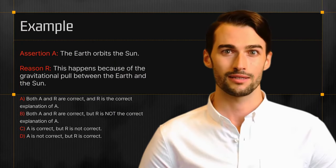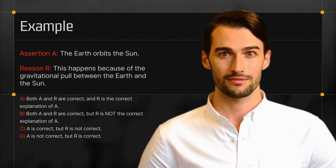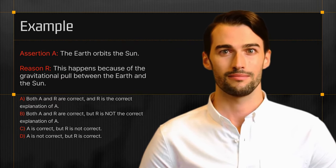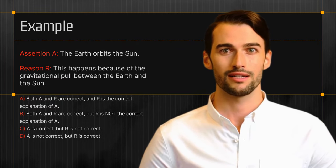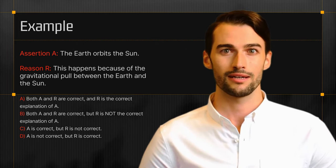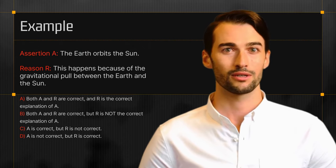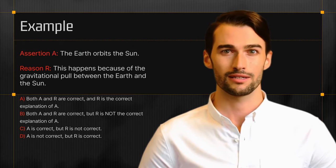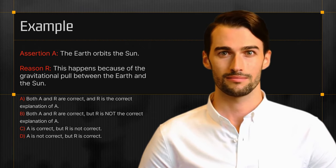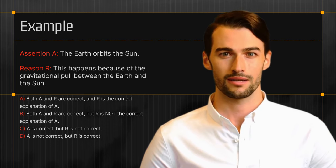Let's illustrate this format with an example. Assertion A: The Earth orbits the Sun. Reason R: This happens because of the gravitational pull between the Earth and the Sun. Based on these statements, take a moment to think about it and select the most appropriate option. The correct answer is Option A — both Assertion A and Reason R are correct, and the Reason is indeed the correct explanation for the assertion. The Earth's orbit around the Sun is due to the gravitational pull between them.